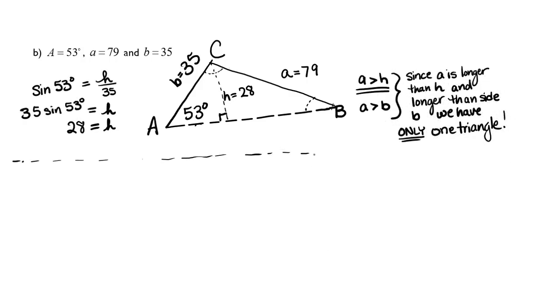We know that there's only one triangle and now all we have to do is find the unknown angles and sides. So the first thing I'll do is take sine of 53 degrees over 79 and set that equal to sine of B over 35.